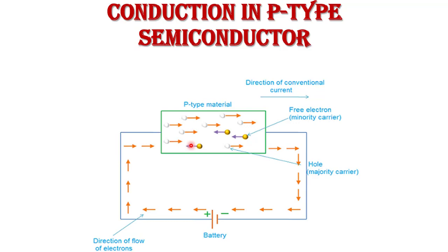In P-type semiconductor material, there are a large number of holes and a small number of free electrons, so holes are the majority carrier in P-type semiconductor. When we apply an external voltage using a battery, holes move toward the negative terminal of the battery and electrons move toward the positive terminal. Because holes are the majority carrier, current flow in P-type semiconductor is mainly due to holes.